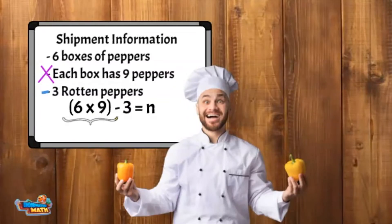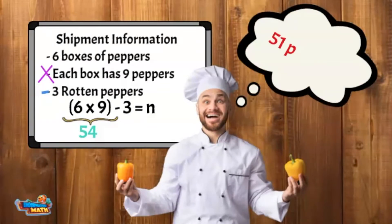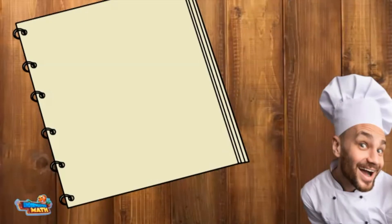Solve for the parentheses first — that gives us 54 — and then take away the three rotten peppers for a total of 51 peppers. You solved your first multi-step problem and helped out my cooking staff tonight!